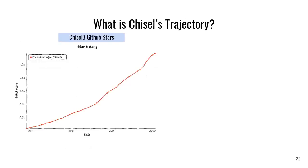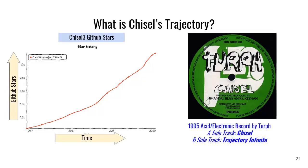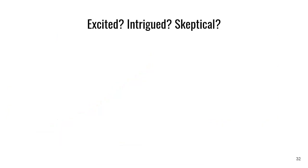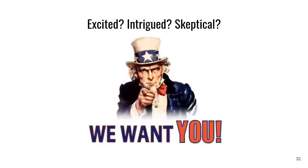So what is Chisel's trajectory? I've set it to infinity and beyond. This is the current GitHub stars over time and it's really taken off. If you try to figure out what that trajectory is, it's pretty good. I like to look for signs in the world: there's a 1995 acid electronic record whose A-side is called 'Chisel' and whose B-side is 'Trajectory Infinite' — coincidence? I don't know. Maybe you're excited, maybe you're intrigued, maybe you're skeptical — we want you. I'm really happy that this community conference is happening. I'm excited to talk to everyone who's using Chisel, hear your stories, and let's keep on moving. Thank you.